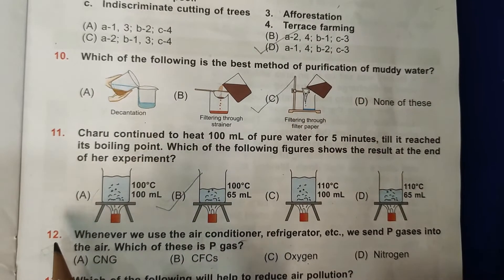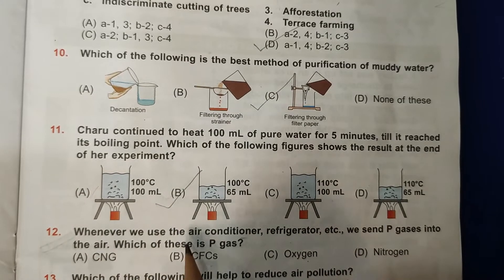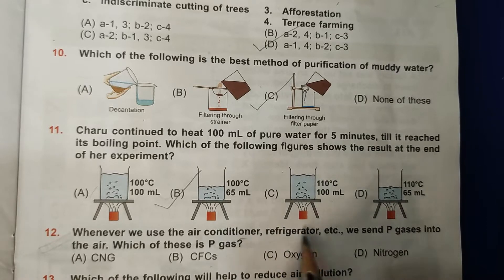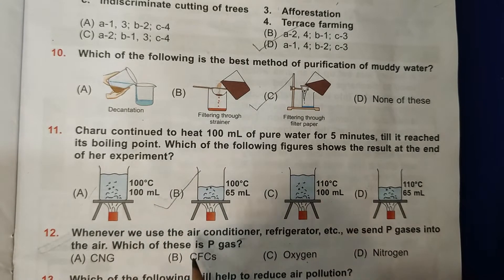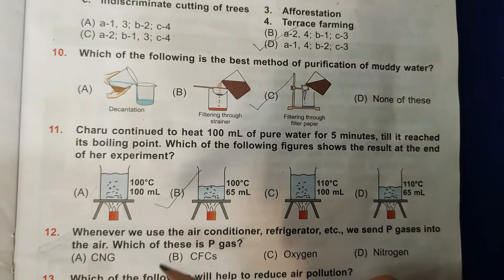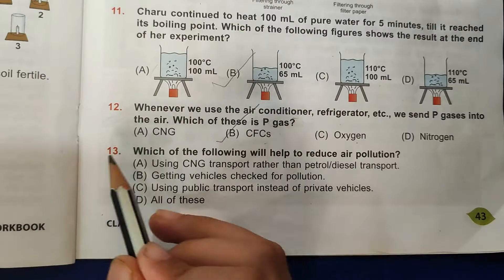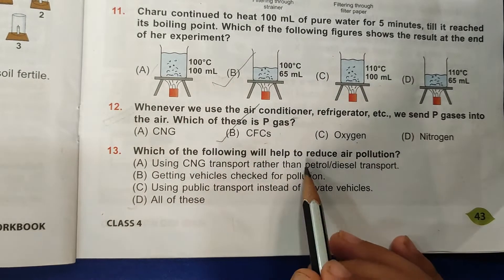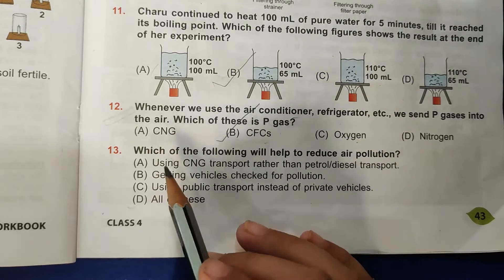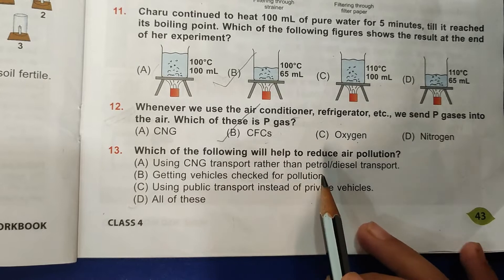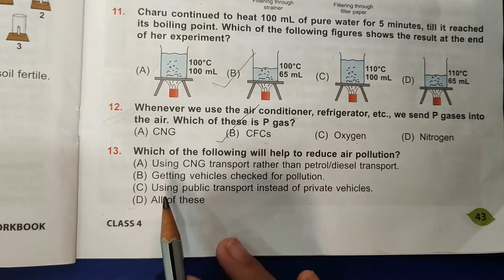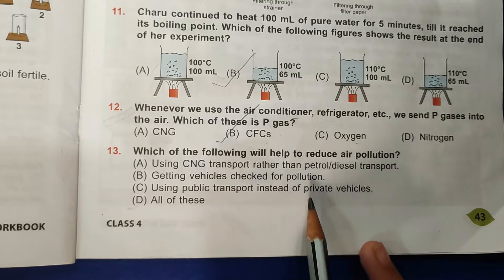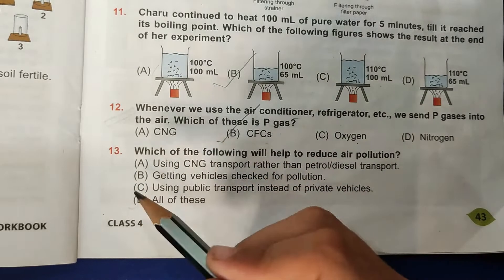After constant boiling, the water changes into water vapor and volume of water decreases, so B is the correct answer. Then 12th question: Whenever we use air conditioner, refrigerator, etc., we send P gases into the air. Which of these is P gas? It is chlorofluorocarbon, that is CFCs, so B is the correct answer. 13th question: Which of the following will help to reduce air pollution? Using CNG transport rather than petrol diesel - yes. Getting vehicles checked for pollution - yes. Using public transport instead of private vehicles - also true, means D, all of these, is the correct answer.